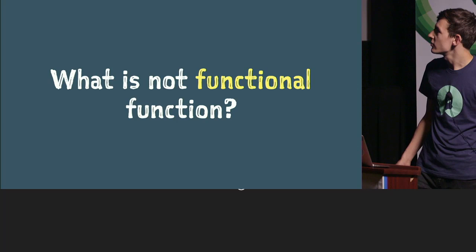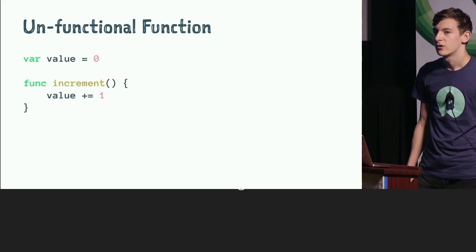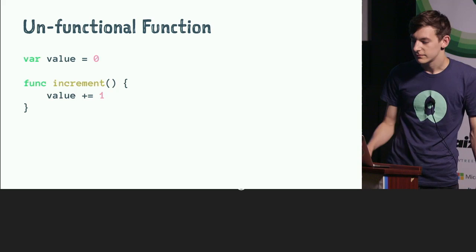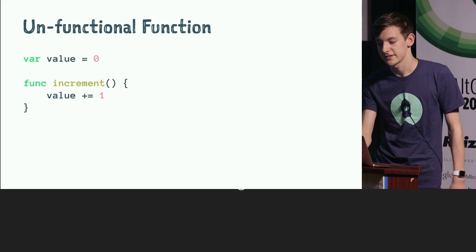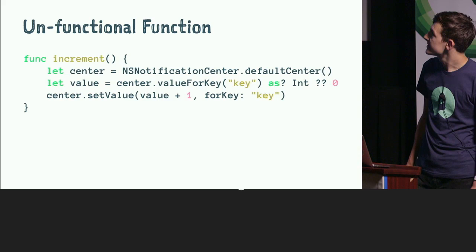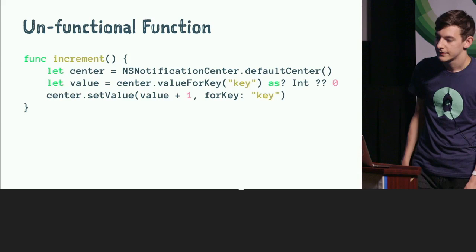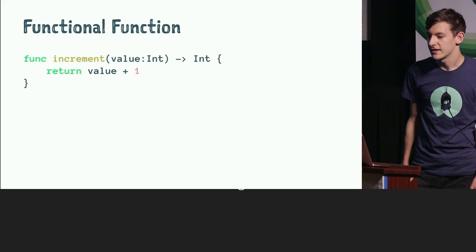Let's look at an example. What is a non-functional function? Well, here's one: we have a function called increment which, when called, mutates a variable in the global namespace called value. We can immediately see this has a side effect — when you call this function, it changes state outside of itself. Another example: we don't have a global variable but instead we're using a singleton and pulling a value out of it, changing it, and saving it back. This is really hard to test because it has a side effect.